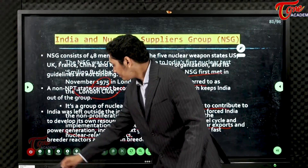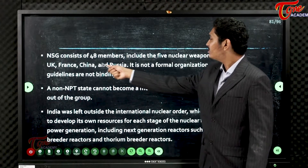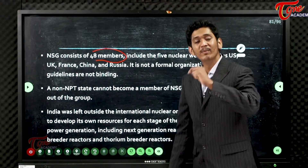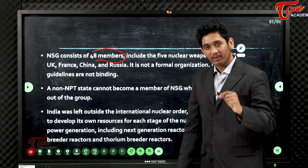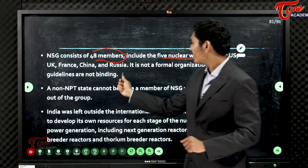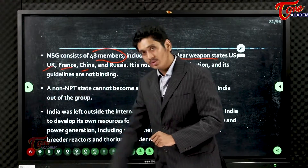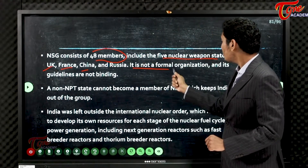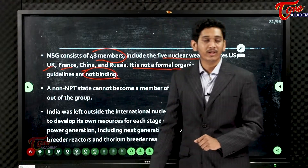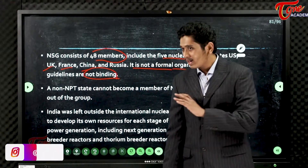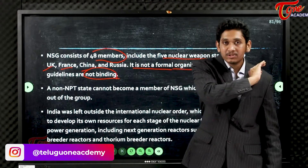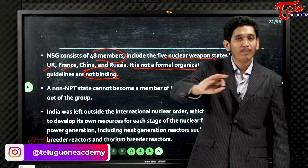NSG consists of 48 members, including the five nuclear weapon states: USA, China, Russia, France, and UK. It is not a formal organization and its guidelines are not binding. NSG is an informal organization — its guidelines are not binding, similar to the missile technology control regime and other weapons control regimes.